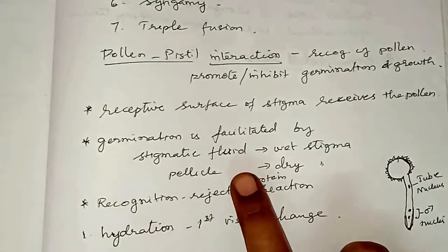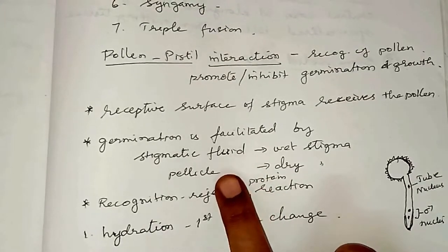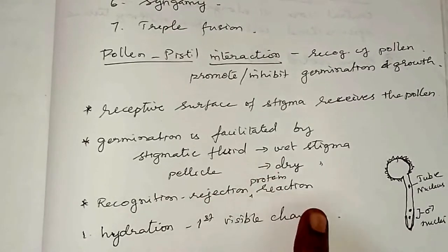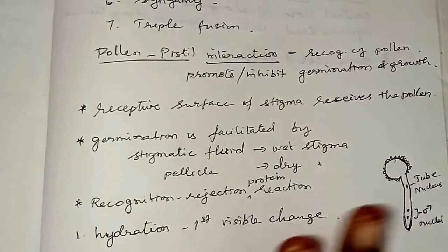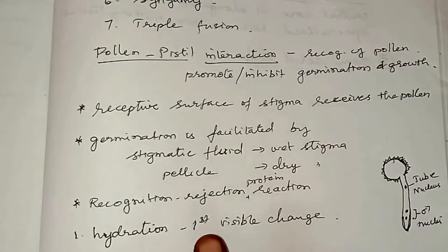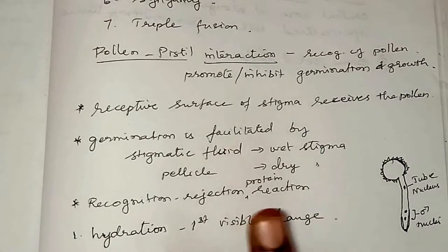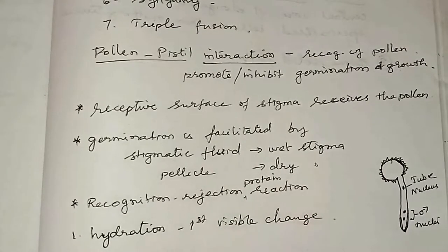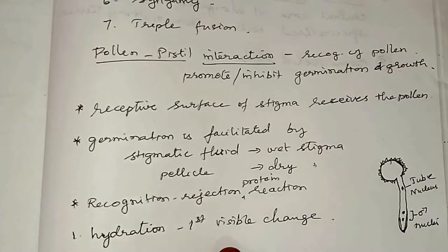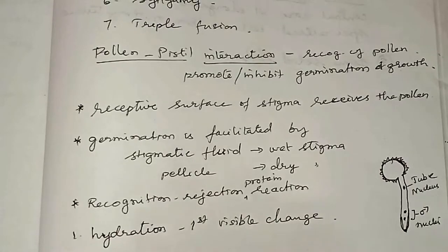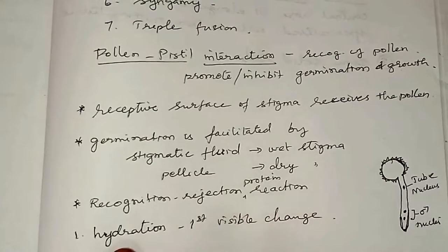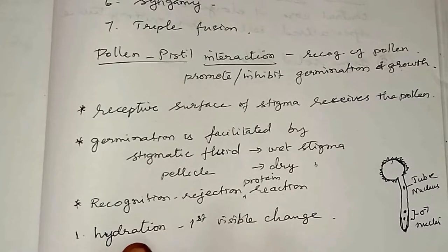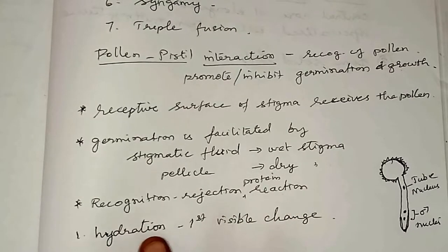Stigmatic fluid and pellicle decide the incompatibility and compatibility of pollen through a recognition and rejection protein reaction. Self-incompatibility may exist between two different species — called interspecific — and among members of the same species, called intraspecific or self-incompatibility. The first visible change after pollen reaches the stigma is hydration, after which pollen wall proteins are released from the surface and the pollen tube germinates.